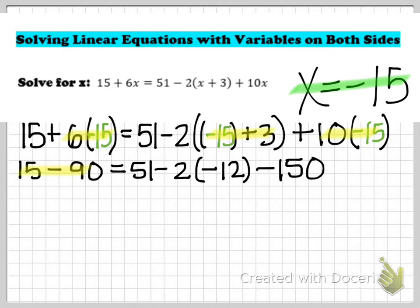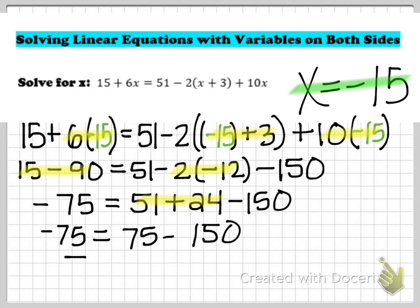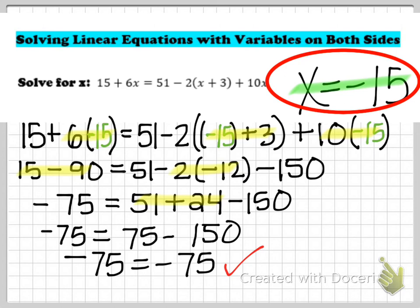Continuing: on the left, 15 minus 90 gives negative 75. On the right, negative 2 times negative 12 is positive 24, so I have 51 plus 24 minus 150, which is 75 minus 150, giving me negative 75. Both sides equal negative 75 — the equation is balanced. So my value of x equals negative 15 is confirmed as the correct solution.